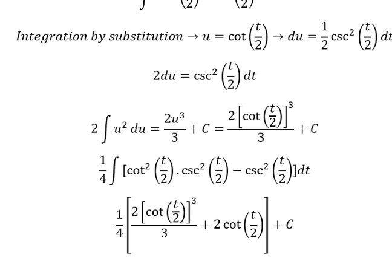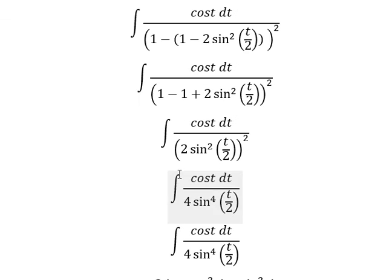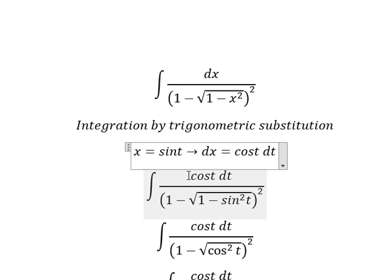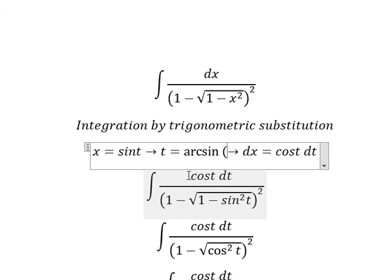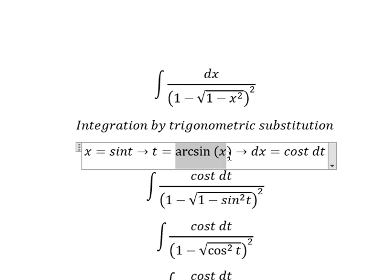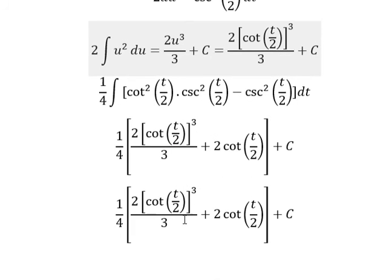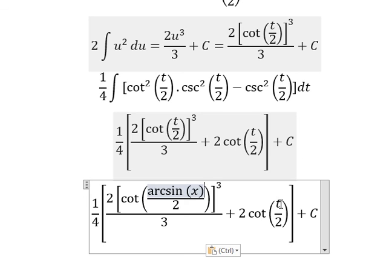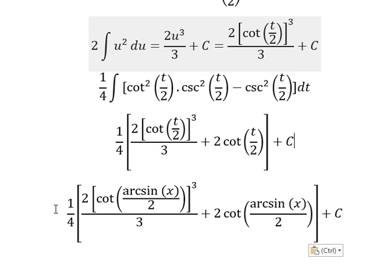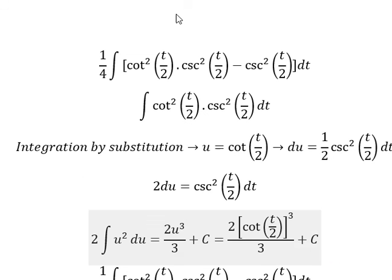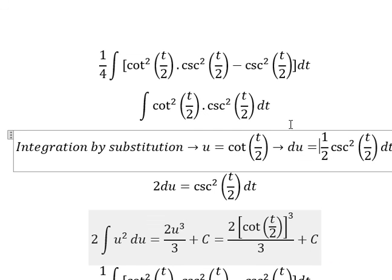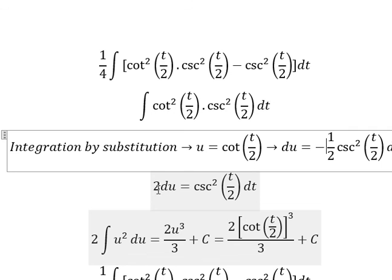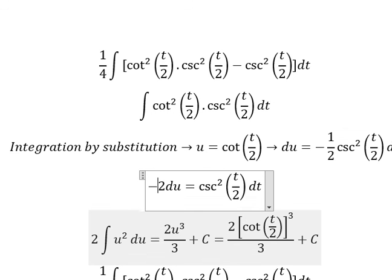We substitute back: t equals arcsin(s), so we replace t with arcsin(s). I need to correct this — it should be negative, so we put negative 2 here. This is the end, thank you for watching.